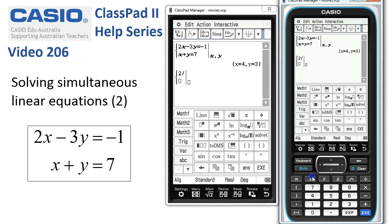2 divided by x equals y. And in the second one, the equation is x equals y minus 1.